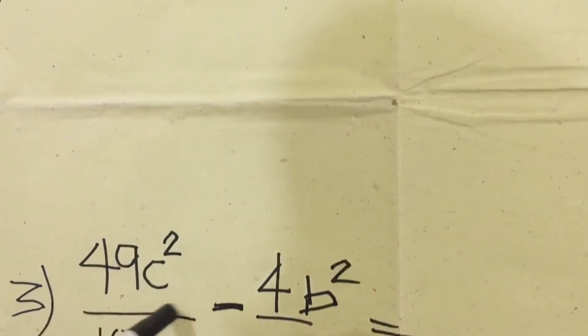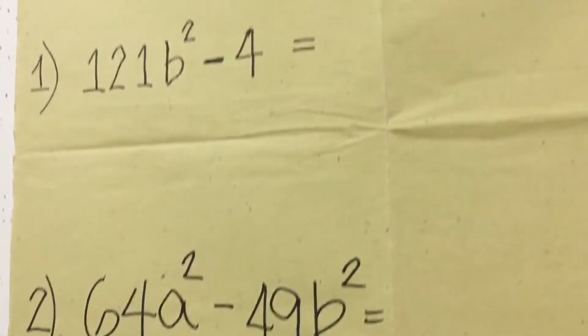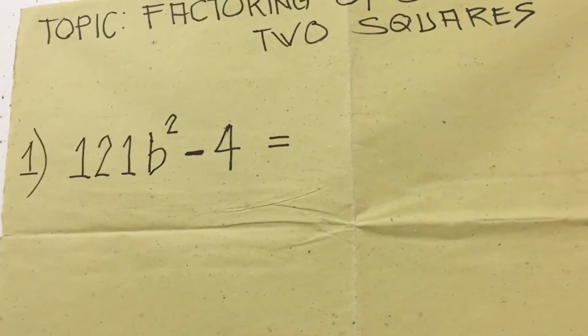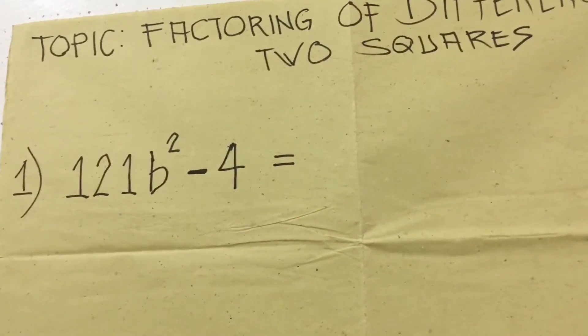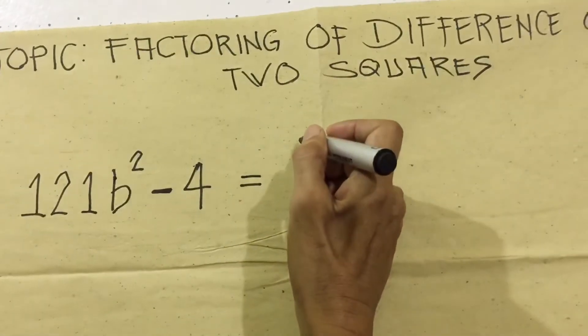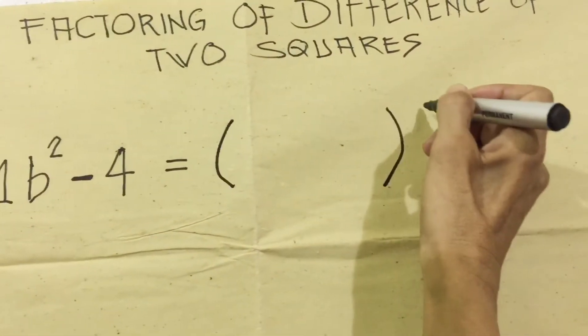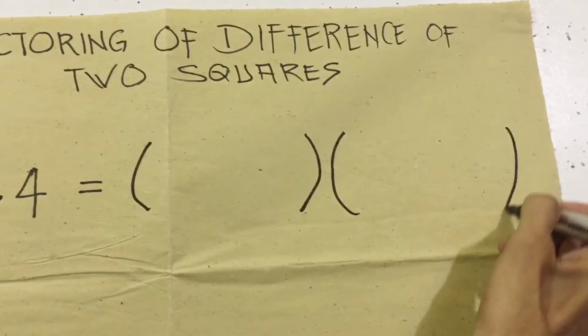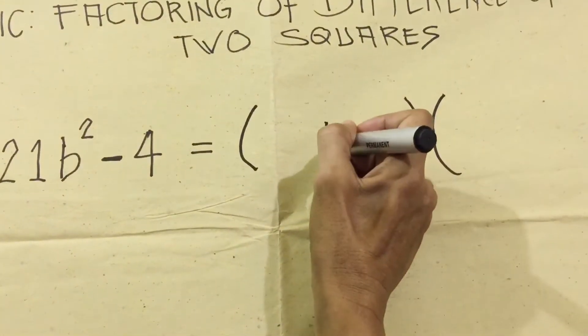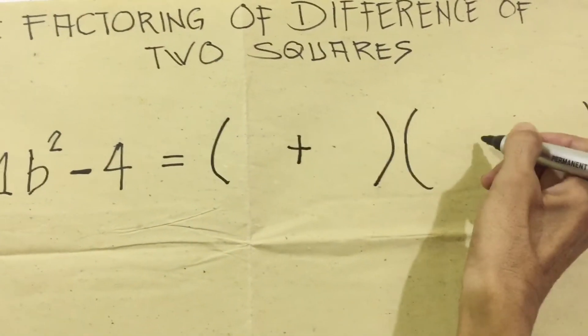To find the factor of the difference of two squares, we're going to use two parentheses first. We will make two parentheses first, then one will be positive and one will be negative.